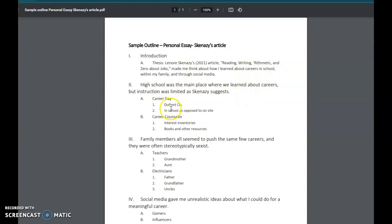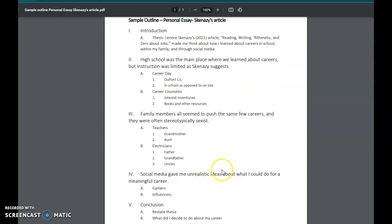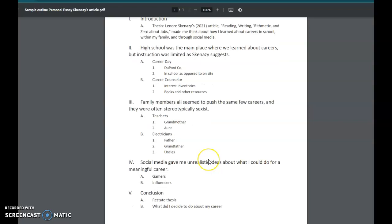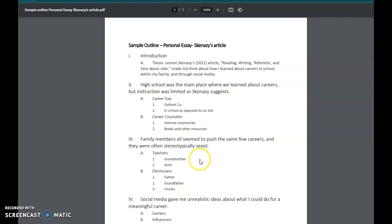In this paragraph they're going to talk about how they learned about careers in school, in this paragraph how they learned about careers within their family, and in this paragraph where they learned about careers through social media. When this person was writing their outline they went through and came up with all their ideas, and you can see that this thesis statement just sums up and gives an idea of the topics that are going to be covered in the paper.